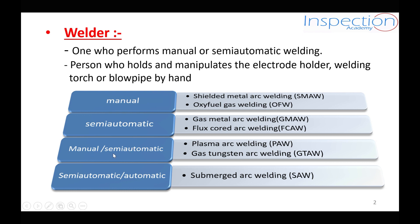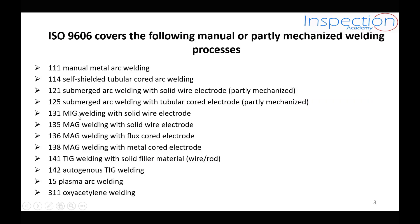Some welding processes can be manual and semi-automatic at the same time, such as plasma arc welding and gas tungsten arc welding. So manual arc welding can include shielded metal arc welding, oxy-fuel gas welding, plasma arc welding, or gas tungsten arc welding, while semi-automatic welding can include gas metal arc welding, flux-cored arc welding, plasma arc welding, or gas tungsten arc welding. Submerged arc welding can only be semi-automatic or fully automatic. In an automatic process, the welder has no control over either the arc length or the travel speed, and in this case we call them the welding operator instead of a welder.